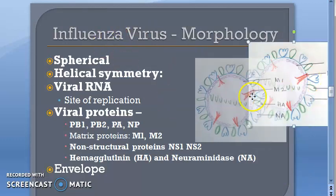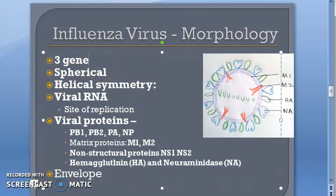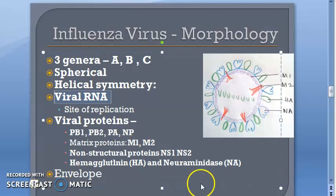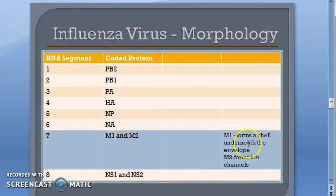Now the morphology of the influenza virus. There are three genera: influenza A, influenza B, and influenza C. They are spherical and have helical symmetry, meaning they have a helical nucleocapsid surrounded by an envelope. The viral RNA consists of multiple negative-sense single-stranded segments — eight segments — and each segment codes for a specific viral protein, as shown in the table.